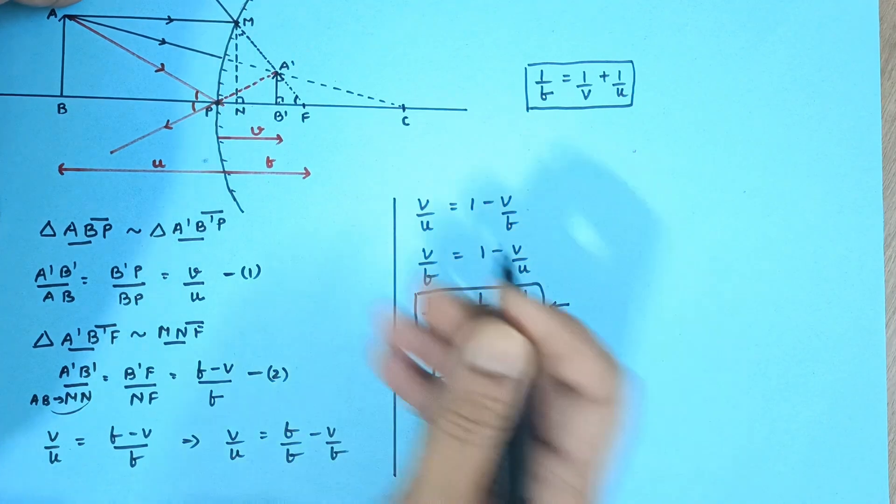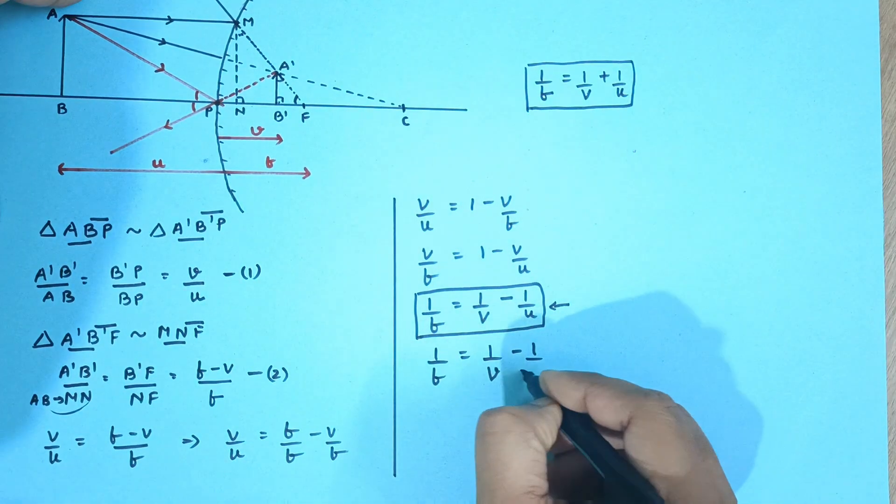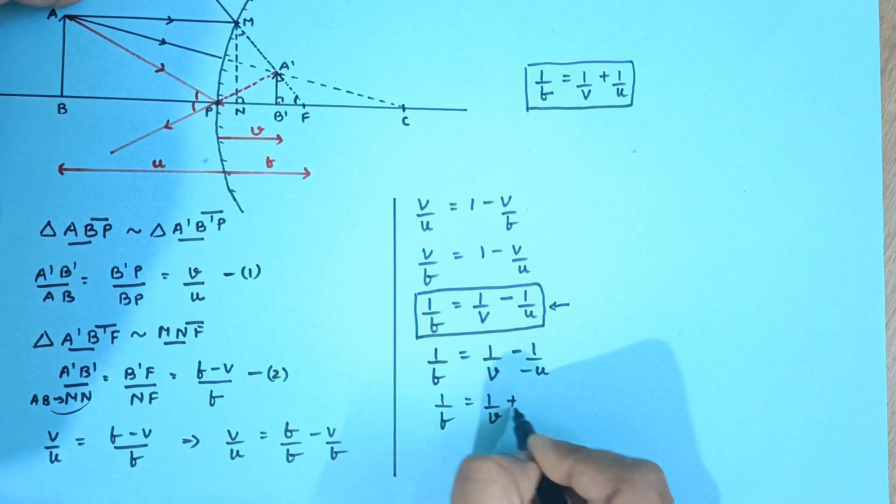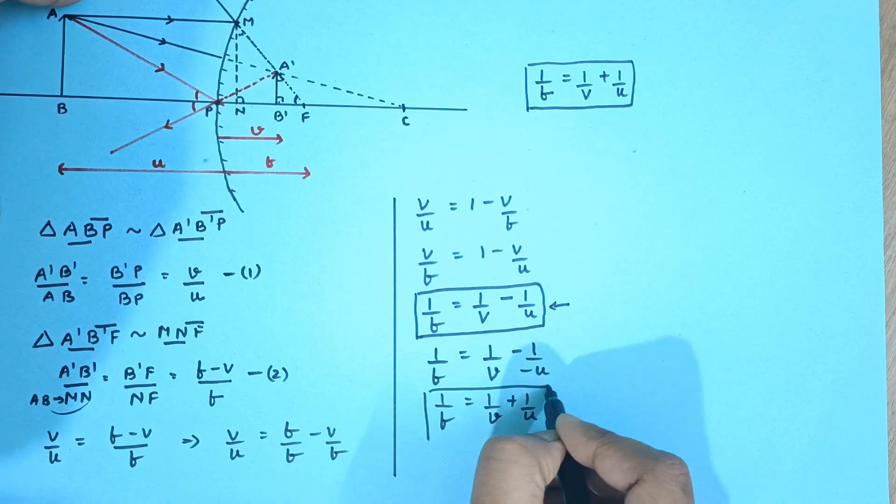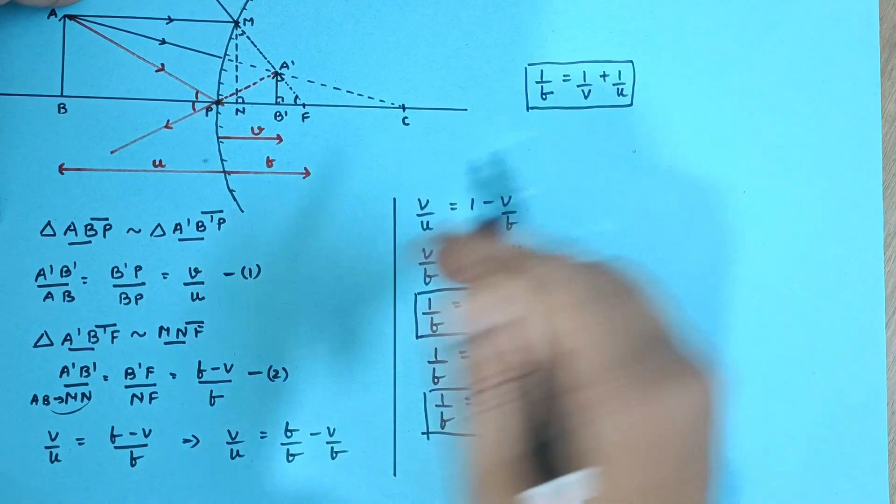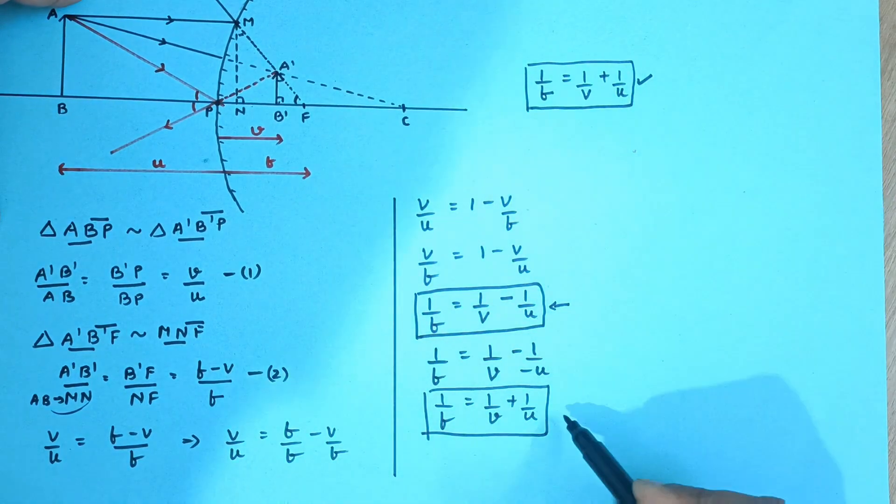So 1 upon F, 1 upon V, but U is on this side minus U. So 1 upon F is equal to 1 upon V plus 1 upon U. So the advantage is by applying sign conventions once during the derivation, these two formulas become the same.